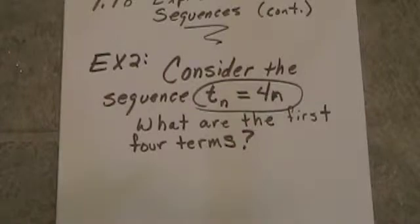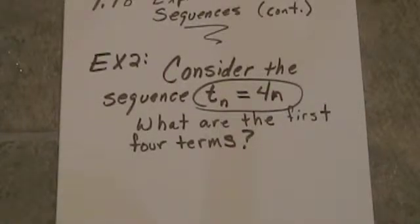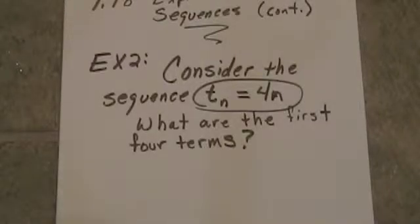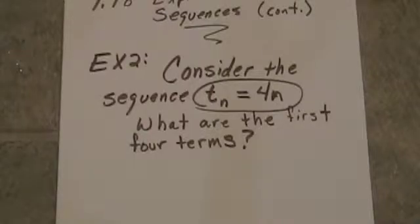We're back looking at explicit formulas for sequences. Here's another example. Consider the sequence t sub n is equal to 4 times n. We'd like to know what are the first four terms for this sequence.